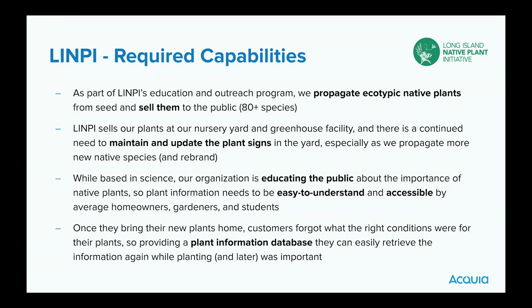We propagate native plants and sell them. We have a nursery yard and greenhouse facility with plant signs that we needed to maintain. We have 80 species now. We also educate the public and do outreach, so information needs to be easy to understand for a normal homeowner rather than just scientific and technical. It has to be accessible. Once people bring plants home, they may forget what they bought, where they wanted to put it, and what conditions were good for that plant.